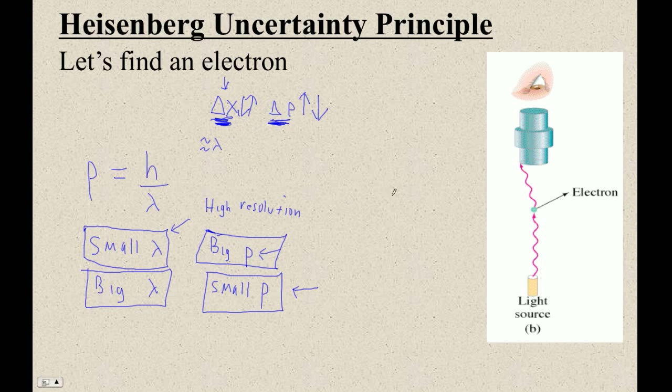So essentially what this means is that if I'm using photons, and this actually applies to any way of locating the electron, there's no way that I can know its position. If I want to know its position exactly, I give up my information about its momentum. And if I want to find its momentum exactly, I'm going to have no idea exactly what its position is. This is, of course, the Heisenberg uncertainty principle.